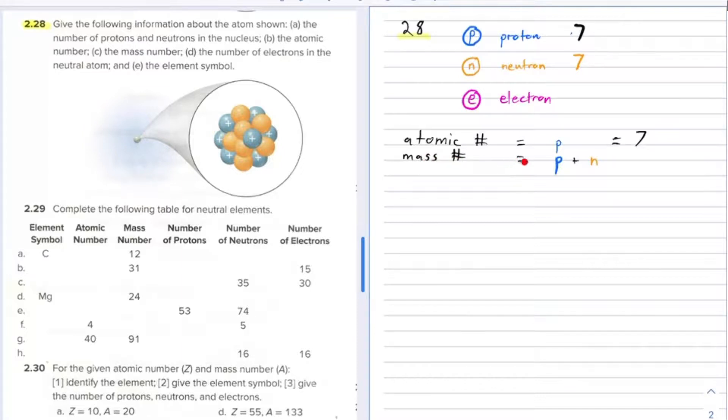The mass number is the number of protons plus neutrons, and you can see that's going to be 14. So the mass number is 14.